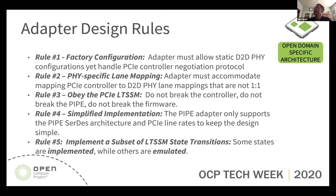Rule number two: PHY-specific lane mapping. The D-to-D PHY is not going to have the same number of pins as a PCI lane. We have to be able to steer traffic from one PCI lane into multiple D-to-D PHY lanes or vice versa — it's not likely to be one-to-one in most cases. Rule number three: obey the PCI LTSSM. The MAC layer and up through the software stack depend on this link transition state machine, and the handshakes being honored between the PHY and the controller. If you want to avoid requiring logic changes in that controller, you need something off the shelf, so you have to abide by all the pipe interface handshakes — and also the firmware.